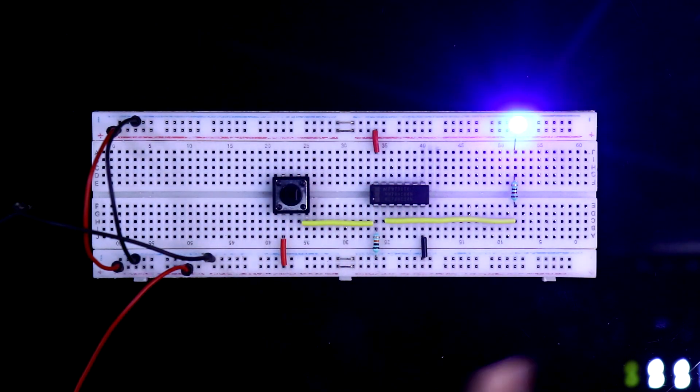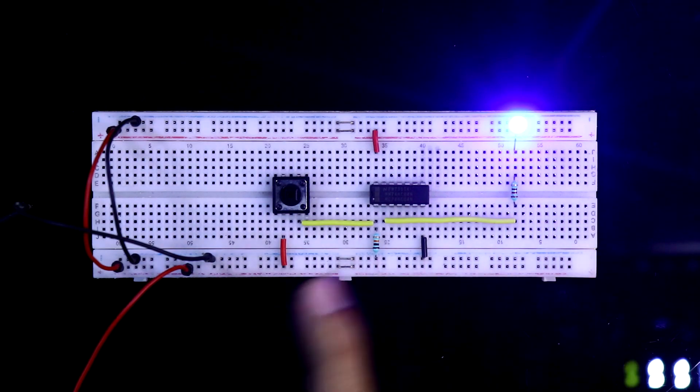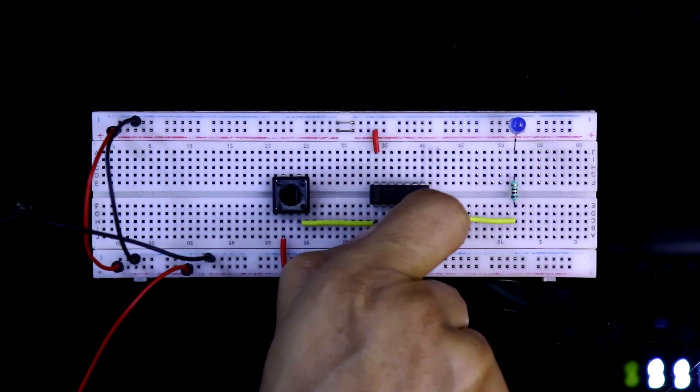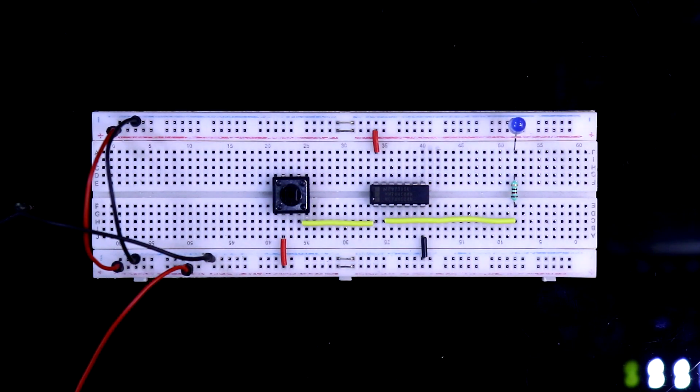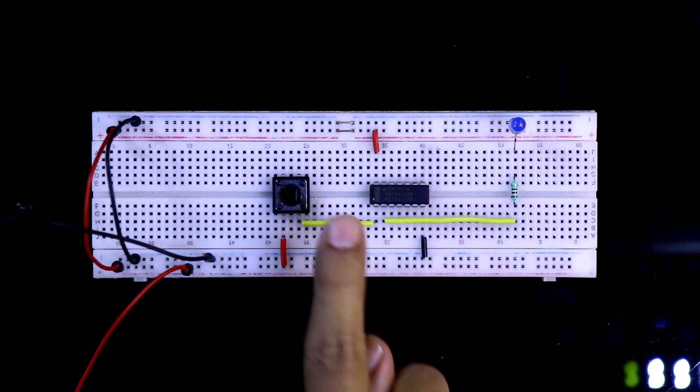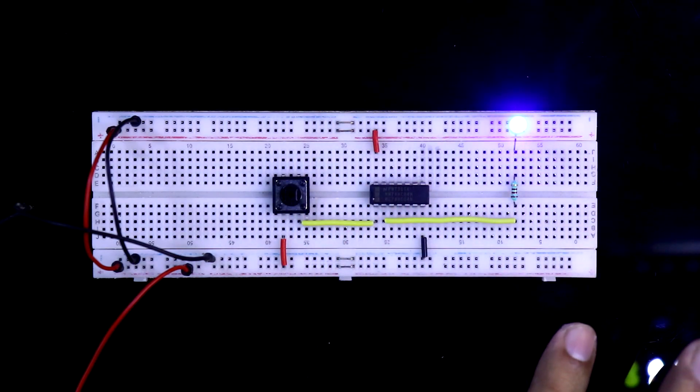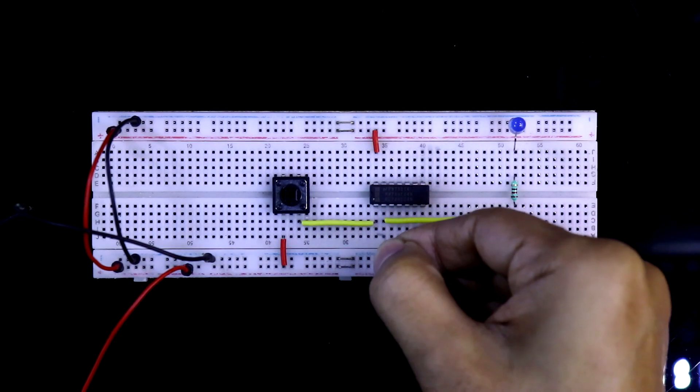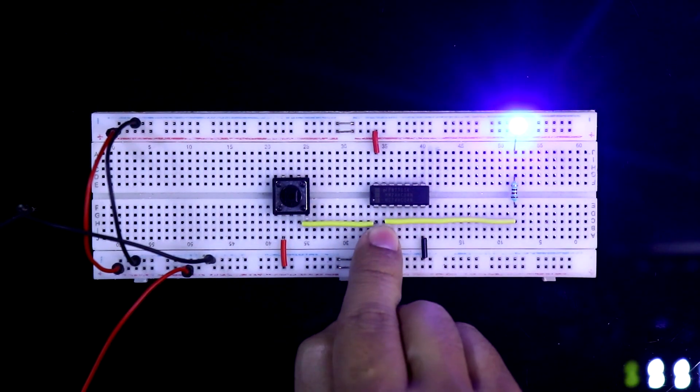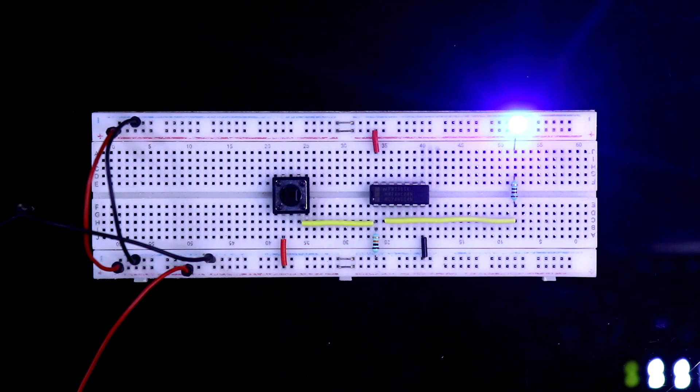So this is why we need the pull-down resistor in this condition. If you remove the pull-down resistor, sometimes the circuit is sensing my hands. So in the logic gate IC, we always use the pull-down or pull-up resistor with the inputs only, not the output. So this is all about pull-down resistor.